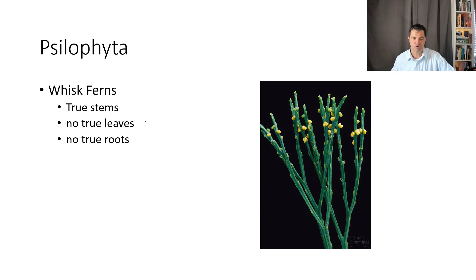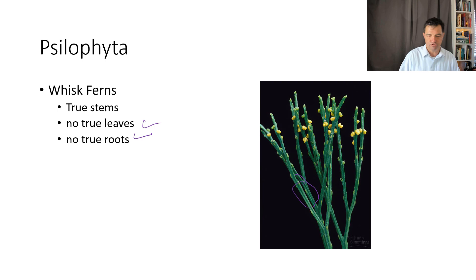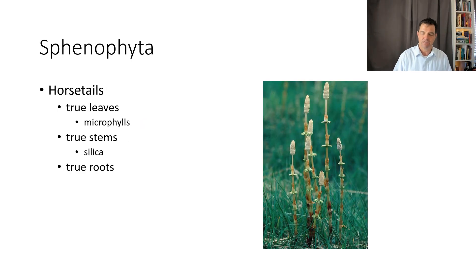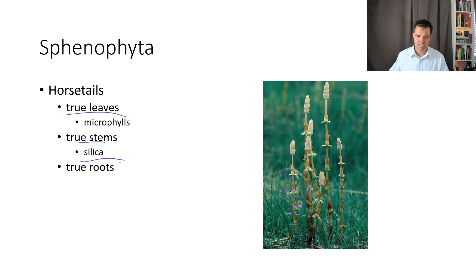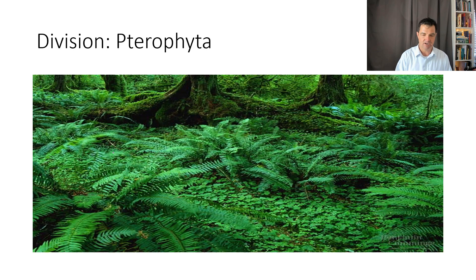Then we have the Zosterophyllophyta, which do have true stems but do not have true leaves or true roots. You can't see much other than the green stick-like structure because they don't have true leaves or true roots. Then we have the Sphenophyta, which are what we call horsetails. They have true leaves, true stems, and true roots. You find them often growing in soggy, water-like conditions. In the little nodes where you have the microphylls — which are the small leaves — the stems often will have silica in them, which is a glass-like material.